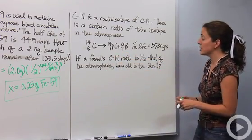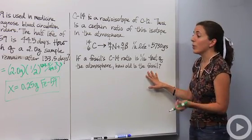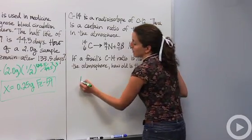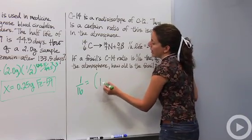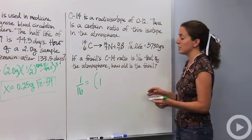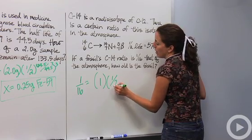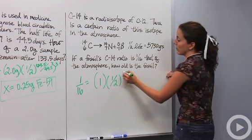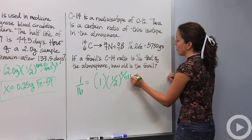So then, if a fossil C-14 ratio is one-sixteenth that of the atmosphere, how old is a fossil? So, we're going to actually say, the amount remaining is one-sixteenth of what the original ratio was. So we're going to say one-sixteenth. The initial amount was one. The ratio was the same as that with the atmosphere. Times one-half. We want to figure out the time elapsed, so we're looking for little t. And we know the half-life is 5,730 years.